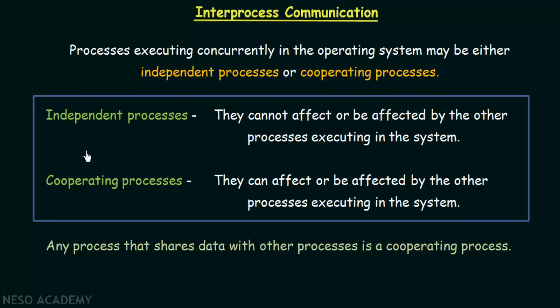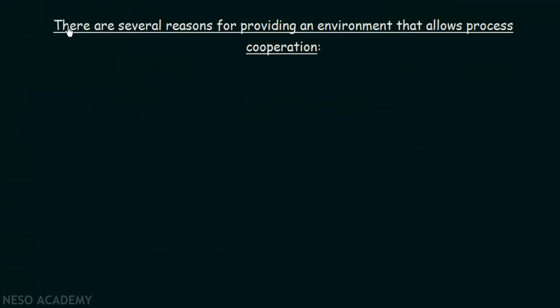Inter-process communication will be required in cooperating processes, because in cooperating processes they are going to be affected by each other and they may need to communicate with each other. There are several reasons for providing an environment that allows process cooperation. We may have several reasons why we need to allow processes to cooperate with each other.